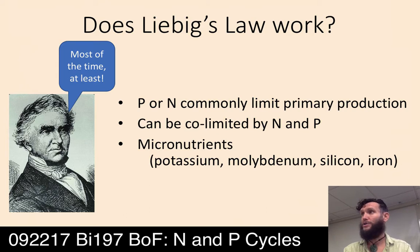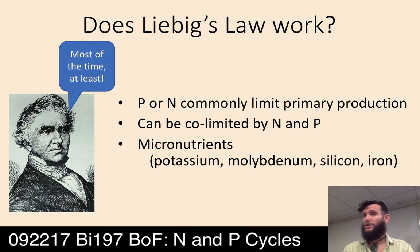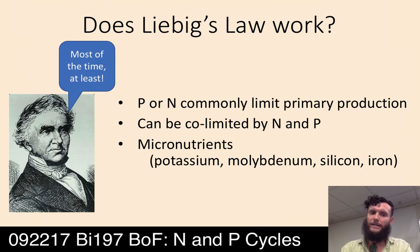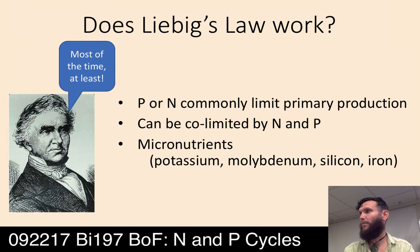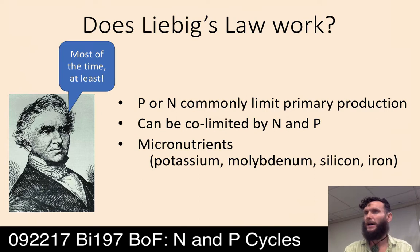There's a lot of carbon in the atmosphere and plants can access it. Liebig's law breaks down when phosphorus and nitrogen are co-limiting — when the staves are the same height. Sometimes micronutrients like potassium, molybdenum, silicon, or iron can be the limiting reagents, but usually it's phosphorus or nitrogen. Plants do need some of those trace elements we identified on the periodic table.